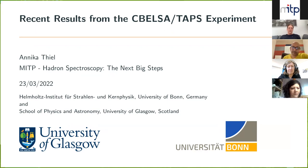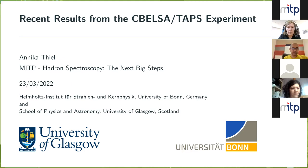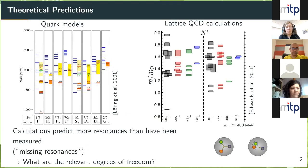I will talk about baryon spectroscopy today and mainly about the CB-ELSA-TAPS experiment. If you want to look into the excitation spectrum of the nucleons, there are several different theoretical predictions available. On the left side is a constituent quark model from 2001, and on the right side is a lattice QCD calculation from 2011. In each column, the predicted states for different quantum numbers are shown.